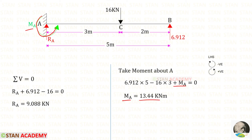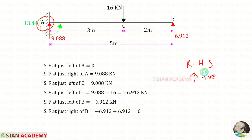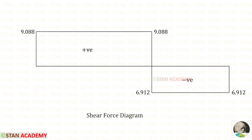Now we are going to draw the shear force diagram. The shear force values are found from point A using the right-hand side rule: upwards is positive and downwards is negative. Using that rule we can find all of the values. Here you can see the shear force diagram.